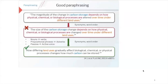Here are some examples of good and bad paraphrasing. The original text reads: 'The magnitude of the change in carbon storage depends on how physical, chemical, or biological processes are altered over time under different land uses.' A basic paraphrase just changes synonyms and word order: 'The size of the carbon storage change depends on how physical, chemical, or biological processes are changed over time under different land uses.' Even though the original source is cited, it's very similar to the original — this is not effective paraphrasing.